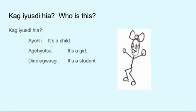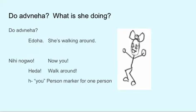Ayohli hiah — This is a child. Agehiuza — It's a girl. Ah for her. Agehiuza. Didolekwaski — in this case, di indicates her. It's a student. Didolekwaski. Doadaneha — again, the ah sound indicates her or she.